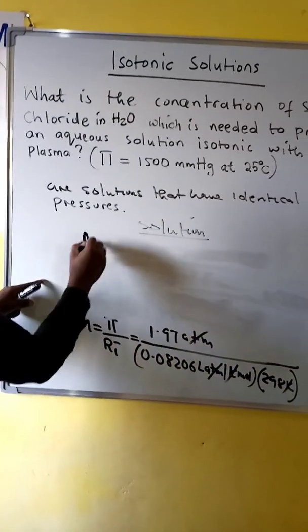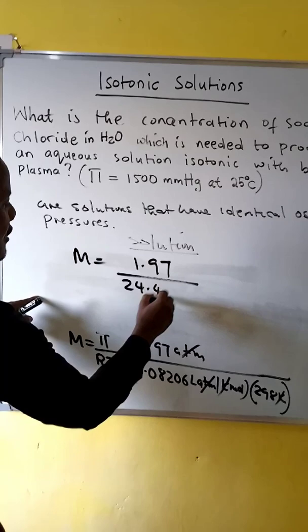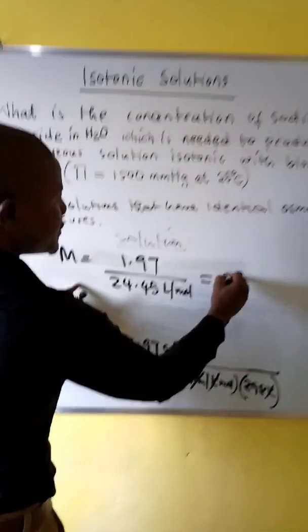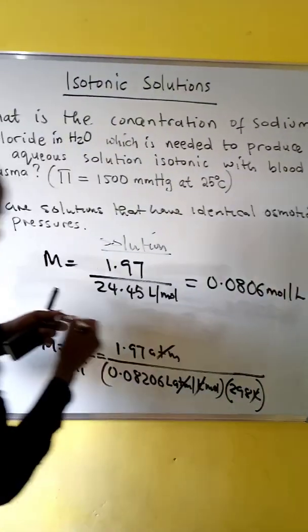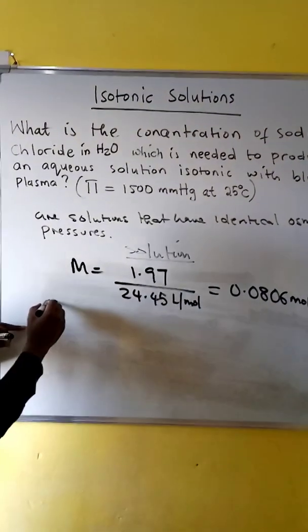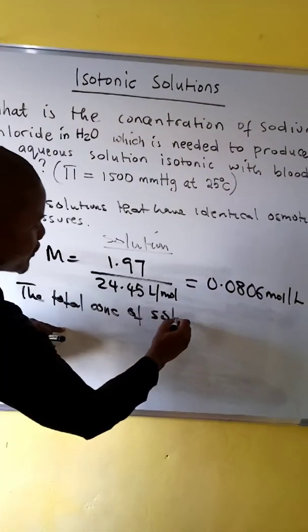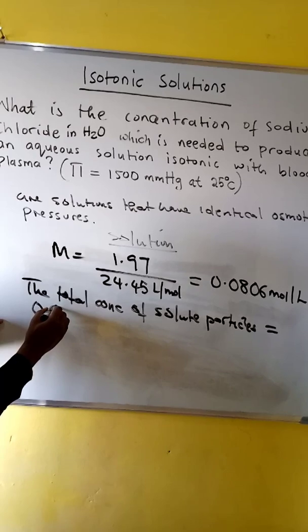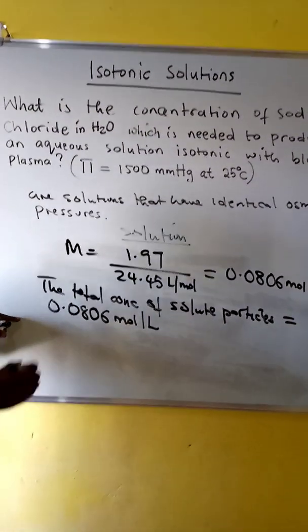When we divide, we get M is equal to 1.97 over 24.45, which gives us 0.0806 moles per liter. So this is the total concentration of the solute particles. The total concentration of solute particles is equal to 0.0806 moles per liter.